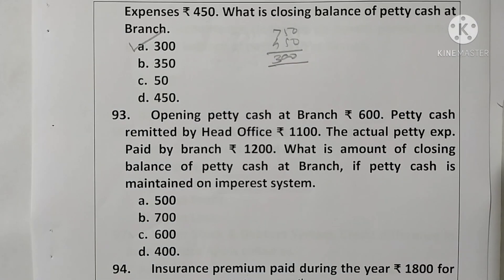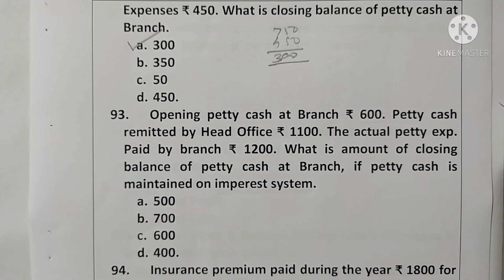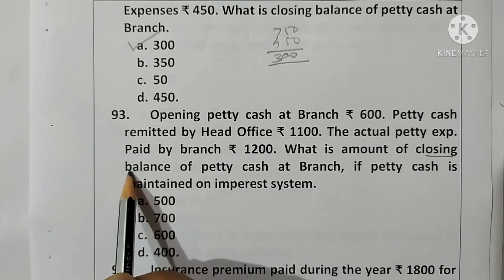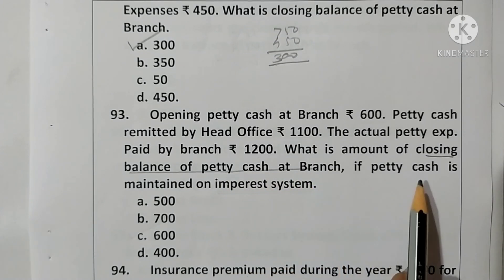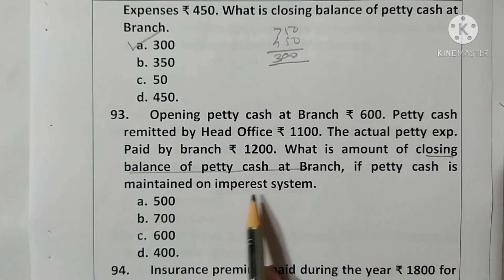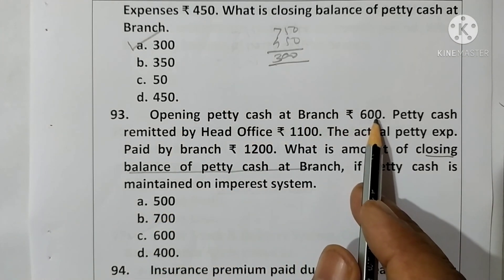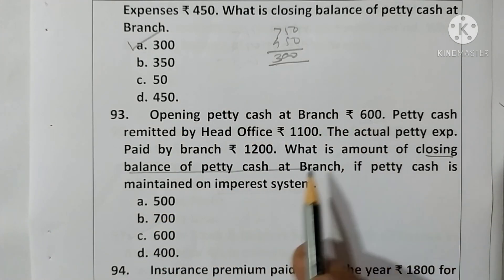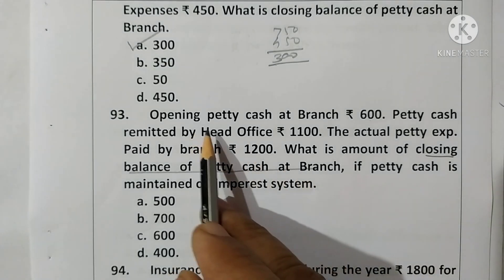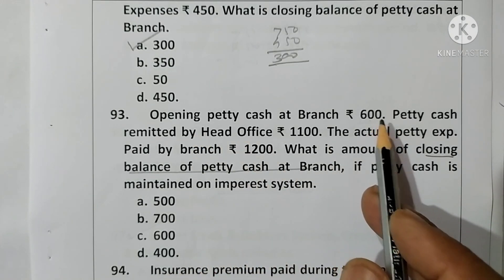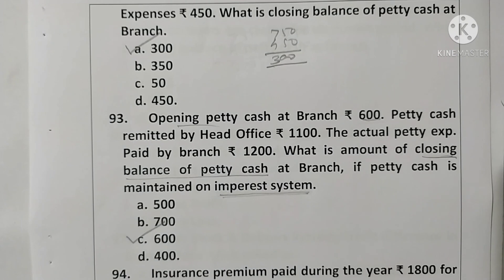Question 93: Opening petty cash rupees 600, petty cash remitted by head office rupees 1100, actual petty expenses paid rupees 1200. What is the closing balance if petty cash is maintained on the imprest system? Under the imprest system, the opening petty cash balance equals the closing petty cash balance. Therefore closing petty cash balance is rupees 600. Option C is correct.